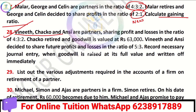We need Chaco, Vinny, and ANSI. Partners and their ratio is 4:3:2. Chaco is retiring and Goodwill is valued at 63,000 — total Goodwill is 63,000. Vinny and ANSI decided to share profits and losses in the ratio of 5:3. This is the new ratio; 4:3:2 is the old ratio.